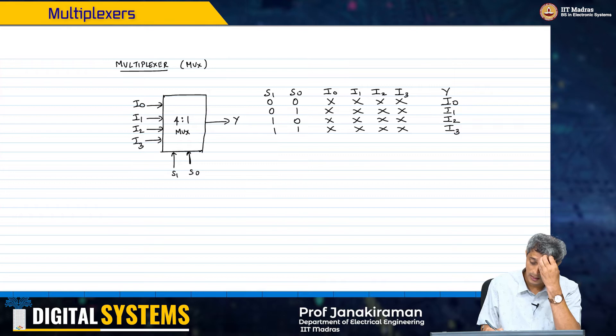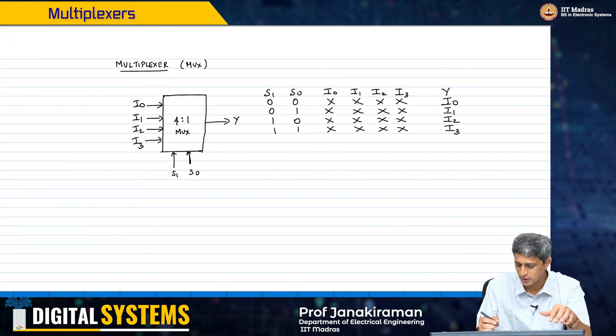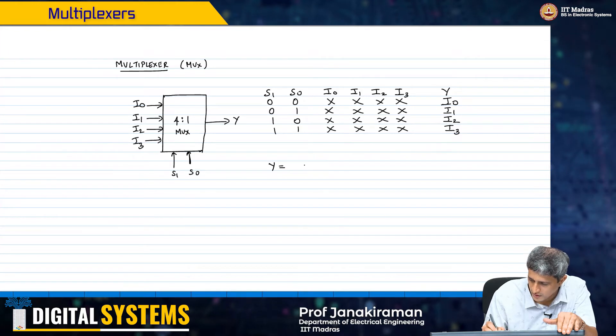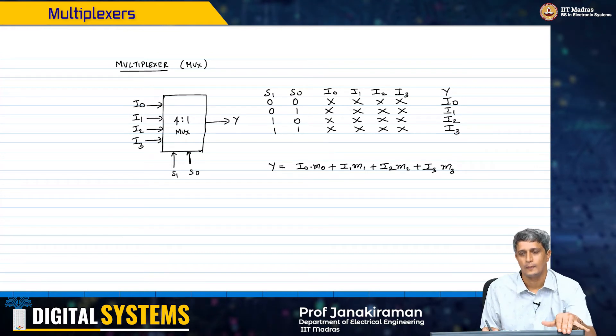Now this is very interesting because what it basically says is that I need to first generate some minterm. If I have to write this carefully, y will simply be I0 into M0 plus I1 into M1 plus I2 into M2 plus I3 into M3.